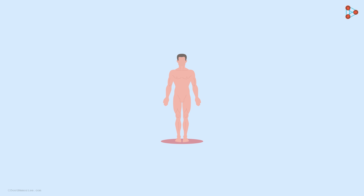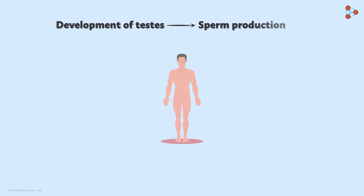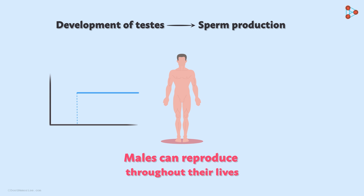In the case of males, development of testes causes production of gametes, i.e. sperms. This process, once started, does not terminate throughout the male's life. Only the sperm count can decrease with age; however, the ability to reproduce still remains.